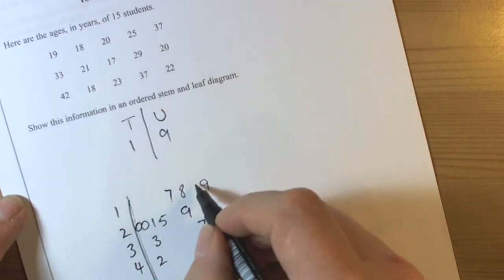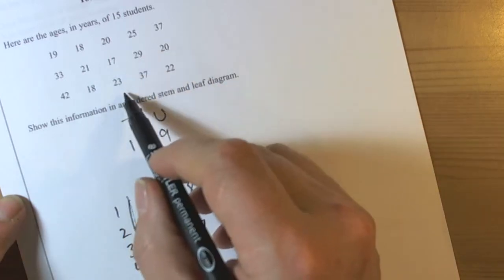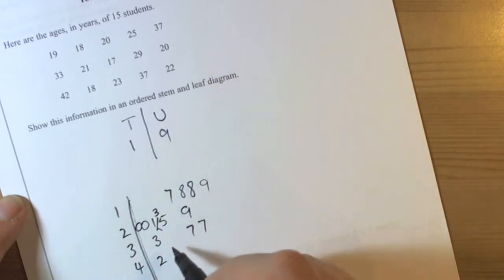Continuing with 18, 23 - so we need a 3 in there. Then 37, so a 7, and 22, so there's a 2 there as well.